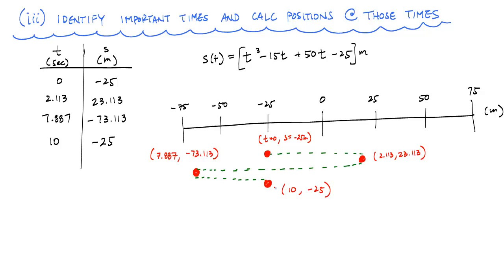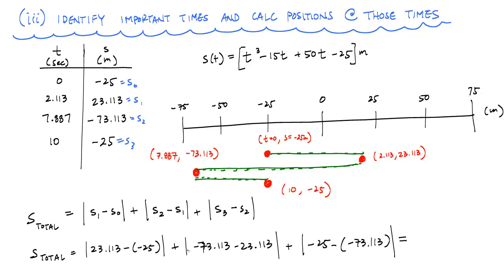My total distance traveled is going to be the sum of this distance plus this distance plus this distance. This is what that total distance formula would look like formally, where this is S₀, this is S₁, this is S₂, and this is S₃. If you just straight up plug and chug, you'll get S total. Here's what it looks like with the numbers filled in. If you add all this up with the absolute values, this will come out to 192.45 meters. That would be the total distance traveled of this particle from 0 to 10 seconds.